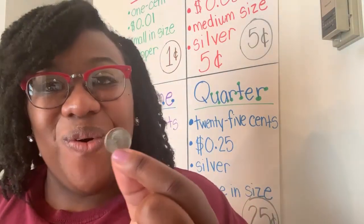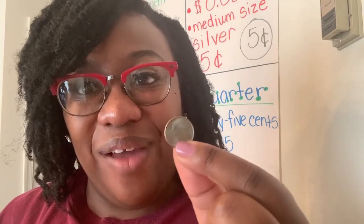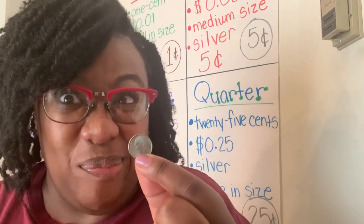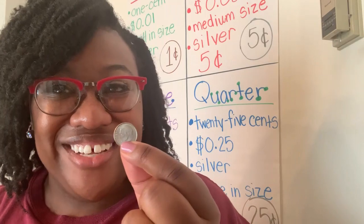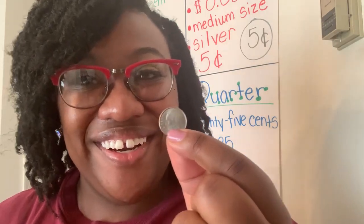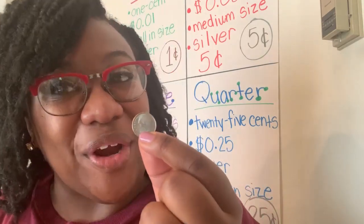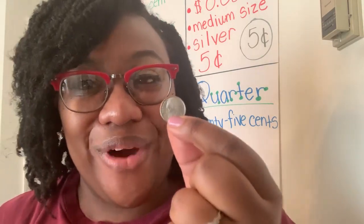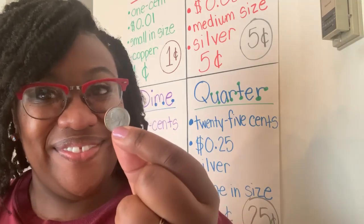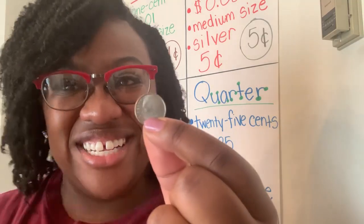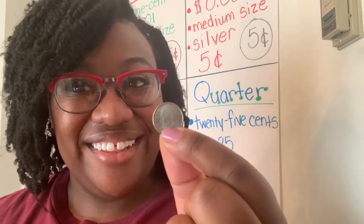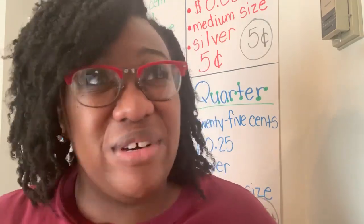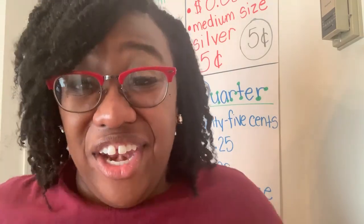Our next coin is the dime. Mr. Dime is kind of small like the penny. Our dime is silver, and it has our 32nd president on it — President Franklin Roosevelt. He is on our heads. If our penny was worth one cent and a nickel was worth five cents, how much is a dime worth?